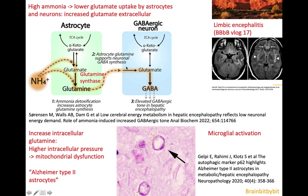The glutamine in the astrocytes also induces the neurons to synthesize more GABA, which is an inhibitory neurotransmitter, so this leads to decreased neuronal metabolism, explaining part of the neuropsychiatric and cognitive symptoms. There is also microglial activation.